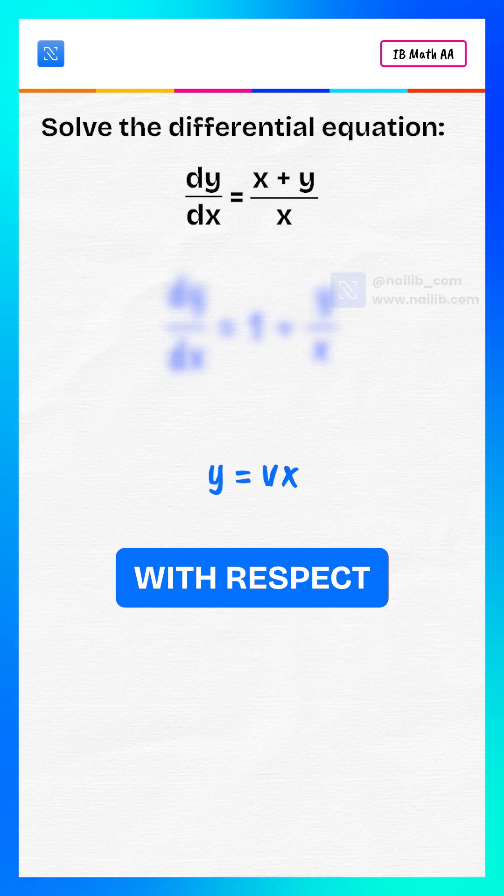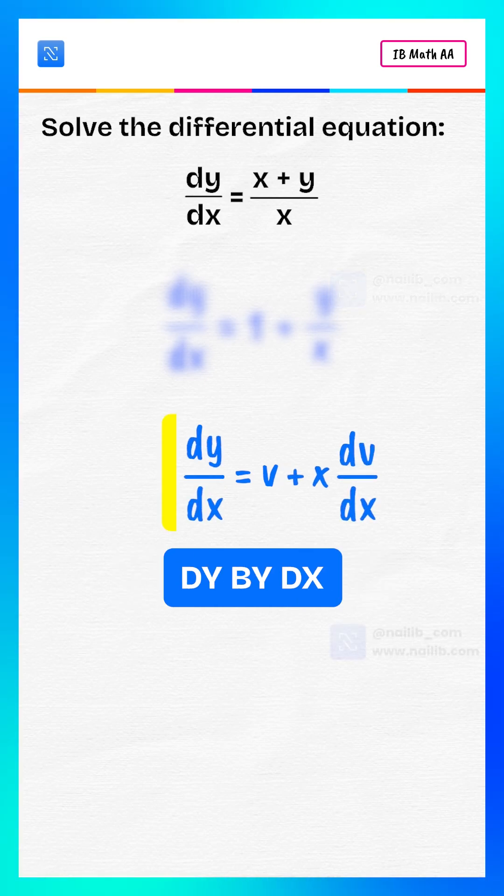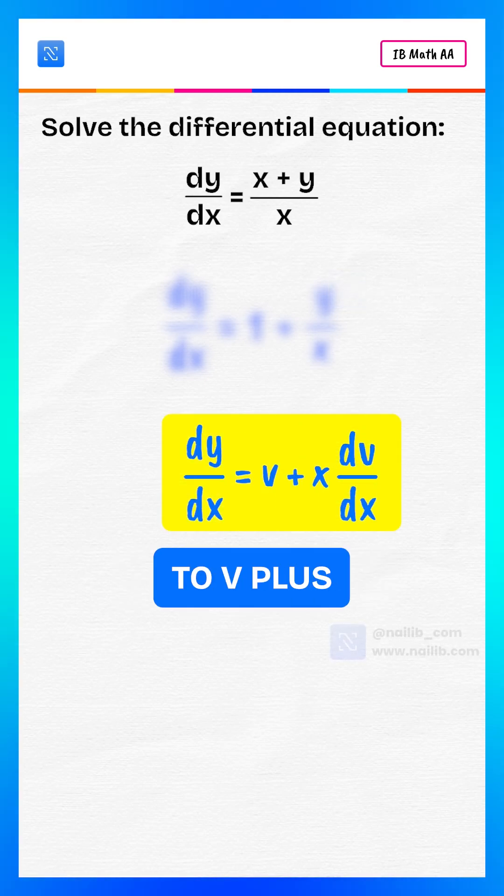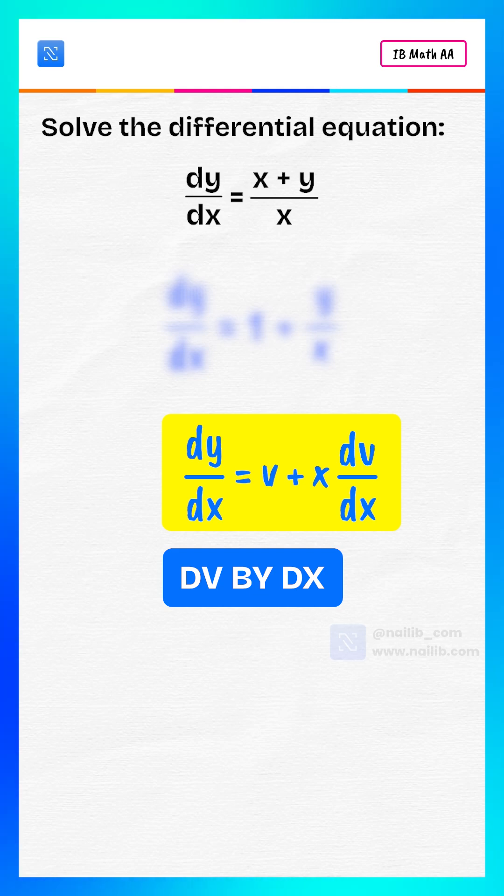Differentiate both sides with respect to x. dy/dx equals v plus x times dv/dx.